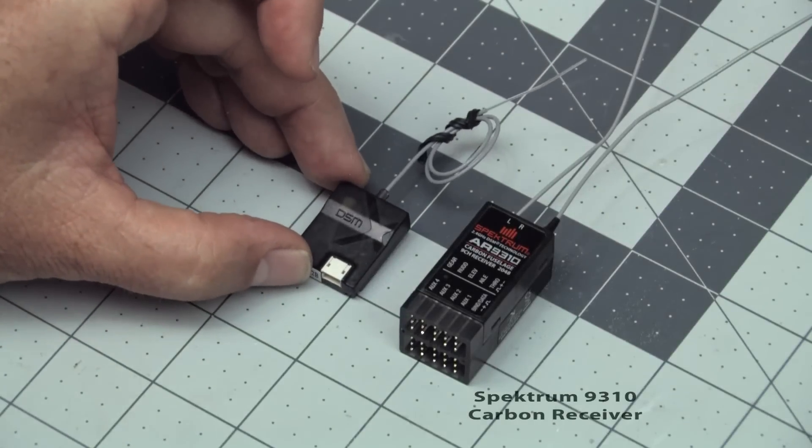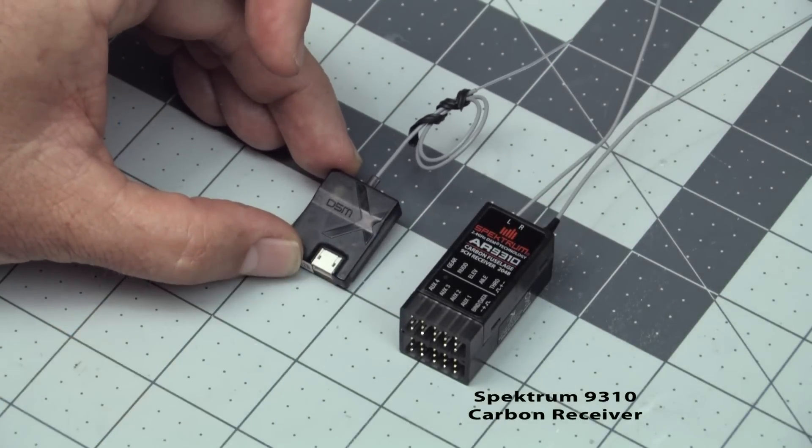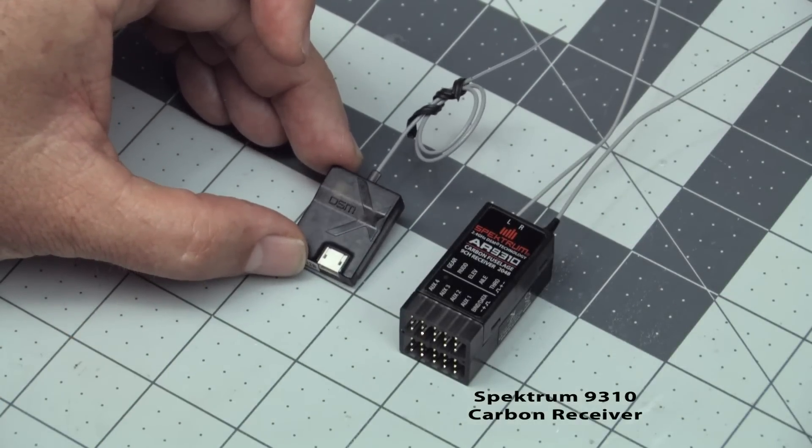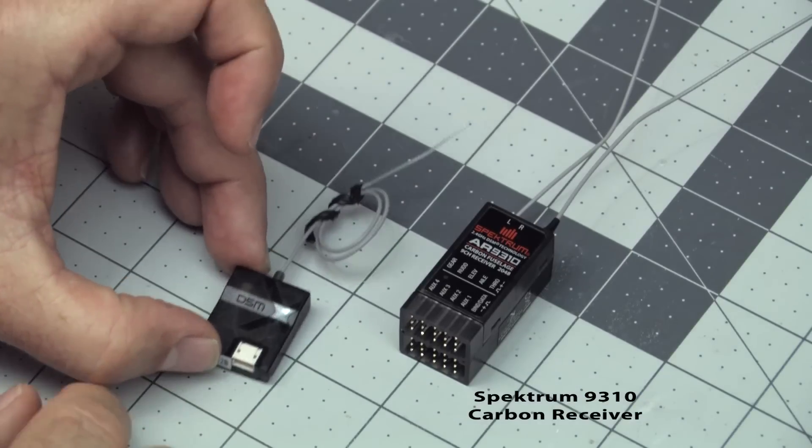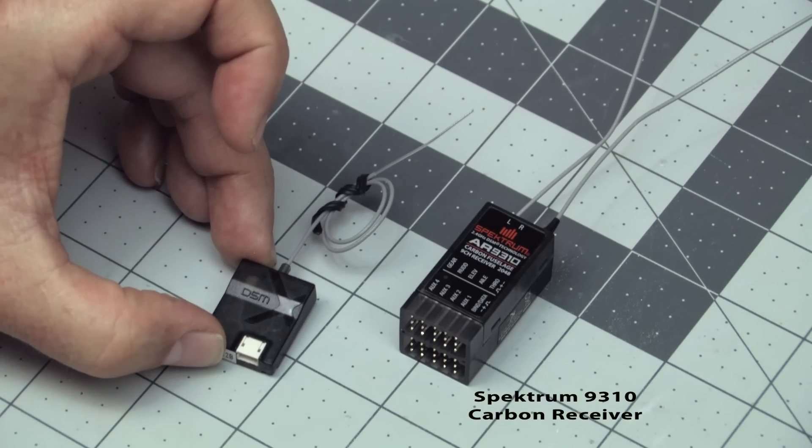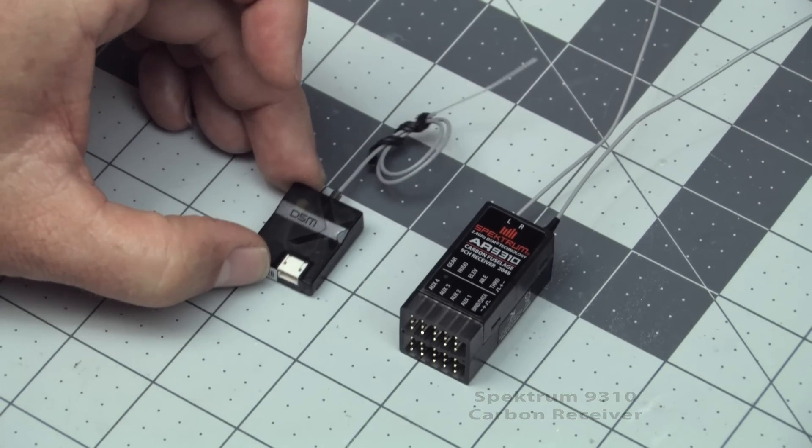For receiver, I'm using the AR9310 DMSX, of course, with my 9503 transmitter. These have the extended carbon antennas here. We're definitely going to put those to use as this is an all carbon fuse.